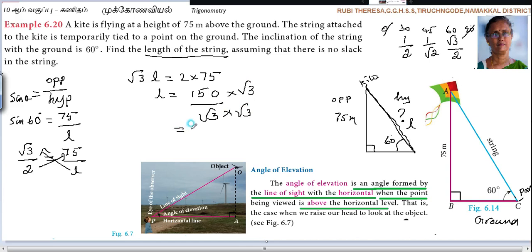So what will you get? 150 root 3 divided by 3. So 1, 3 is 3. 5, 3s are 15. Here 0. So 50 root 3. L equal to 50 root 3 meters. So this is the answer.